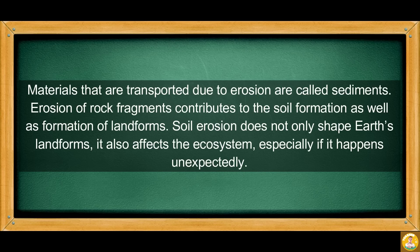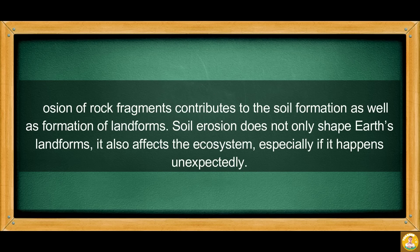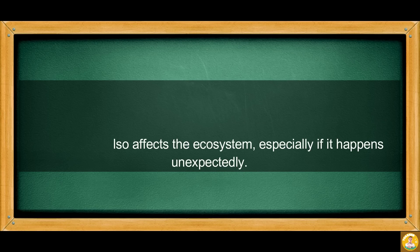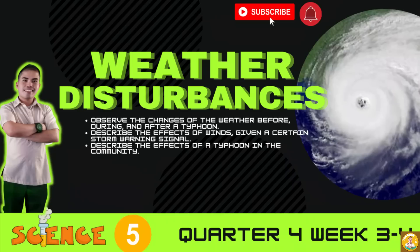Soil erosion does not only shape Earth's landforms. It also affects the ecosystem, especially if it happens unexpectedly. This time, you will learn about weather disturbances.